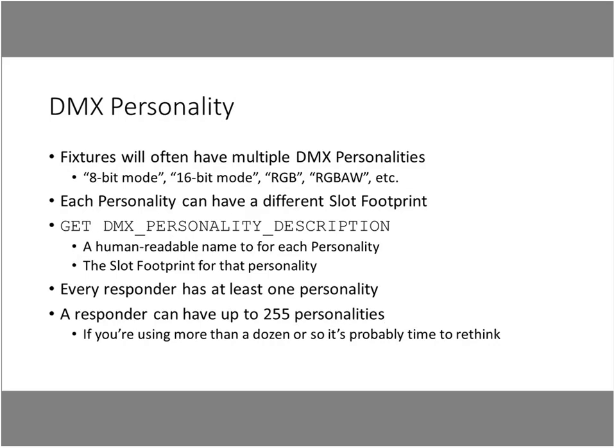In addition to a slot footprint, fixtures will often have multiple personalities — coarse mode, fine mode, limited feature modes, advanced modes. If you're trying to pack more into a universe you go to a smaller footprint; if you want more features or more granular control you go to a personality with a larger footprint. Within RDM, every personality can have a different slot footprint. The controller can ask GET Personality Description, which gives a human-readable name for the personality and its slot footprint — for example, coarse mode, fine mode, RGB, RGBAW — so you can see how many additional slots a given mode will use.